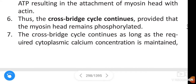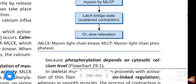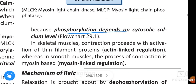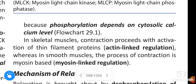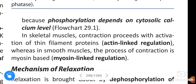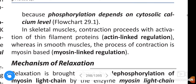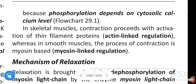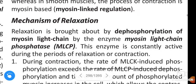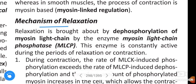The cross-bridge cycle continues as long as the required cytoplasmic calcium concentration is maintained, because phosphorylation depends on the cytosolic calcium level. In skeletal muscles, contraction proceeds with activation of thin filament proteins — actin-linked regulation — whereas in smooth muscle, the process of contraction is myosin-based; we call this myosin-linked regulation.